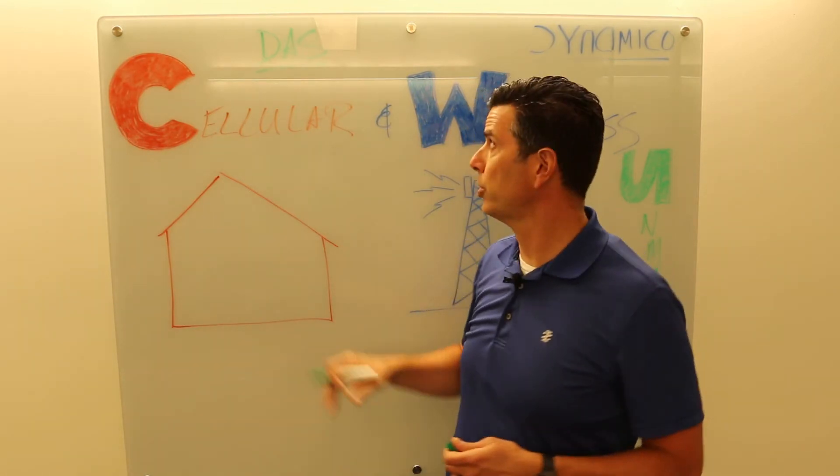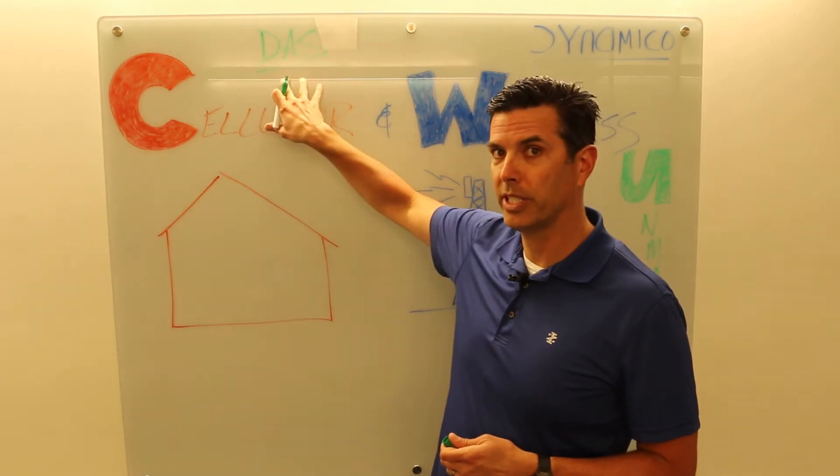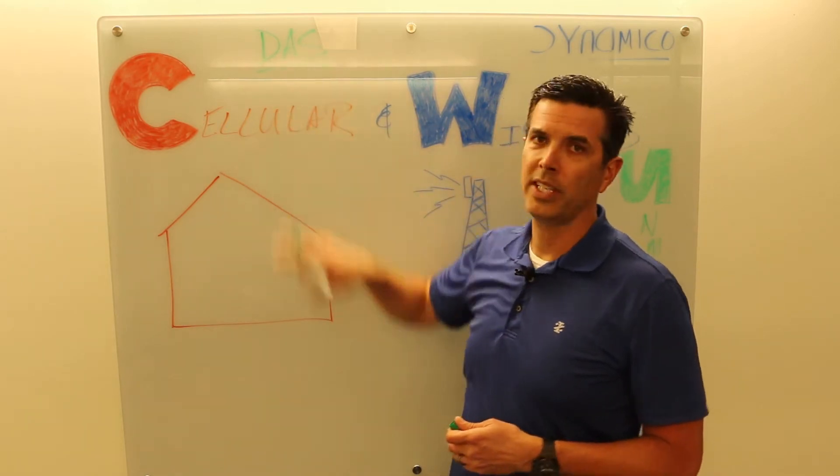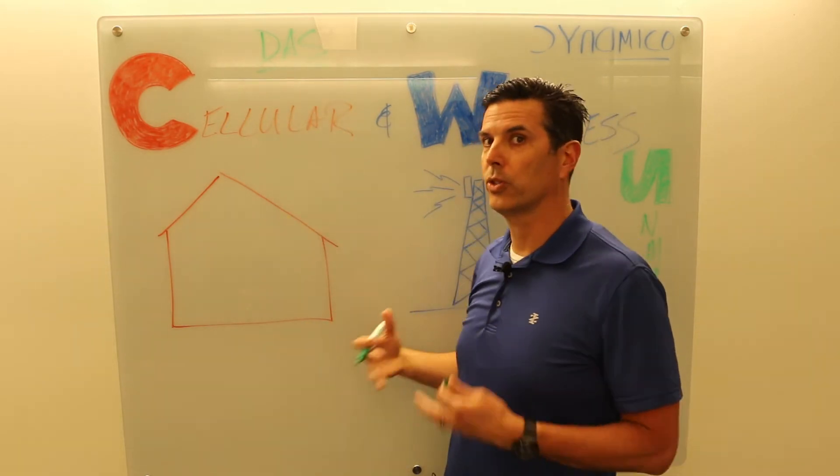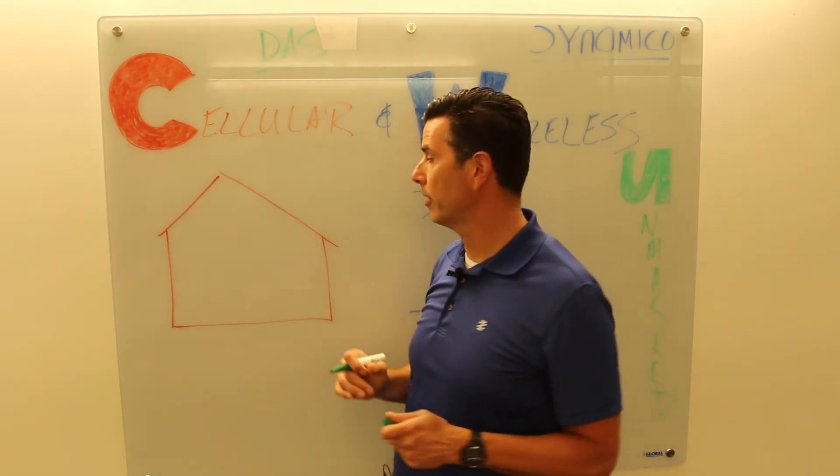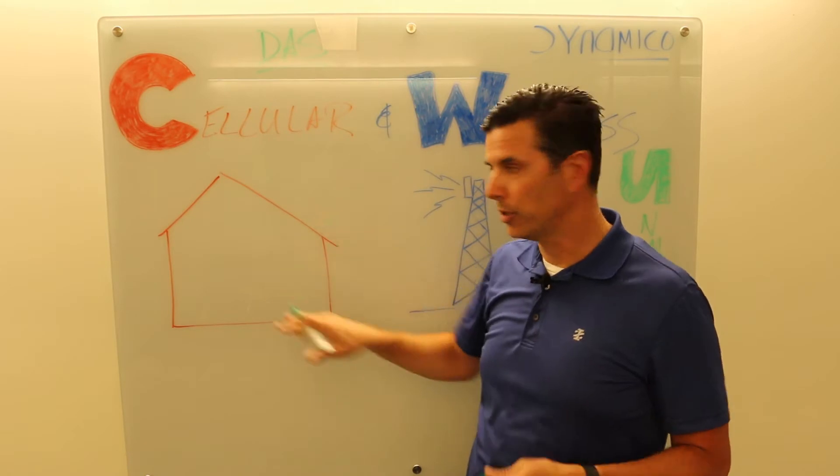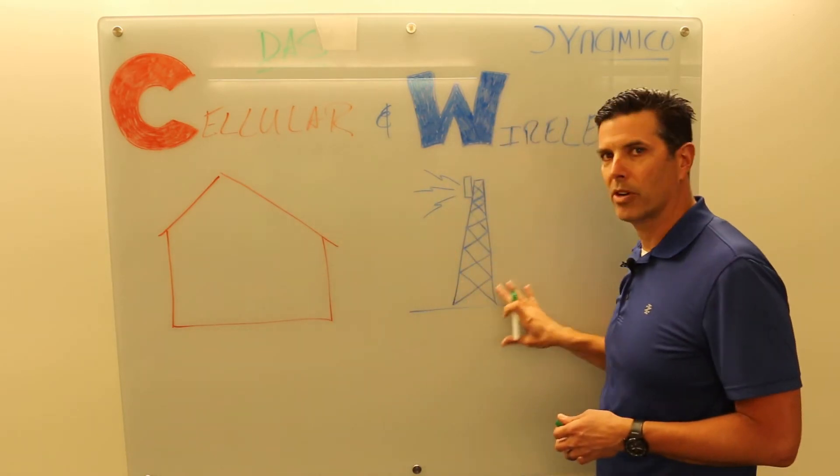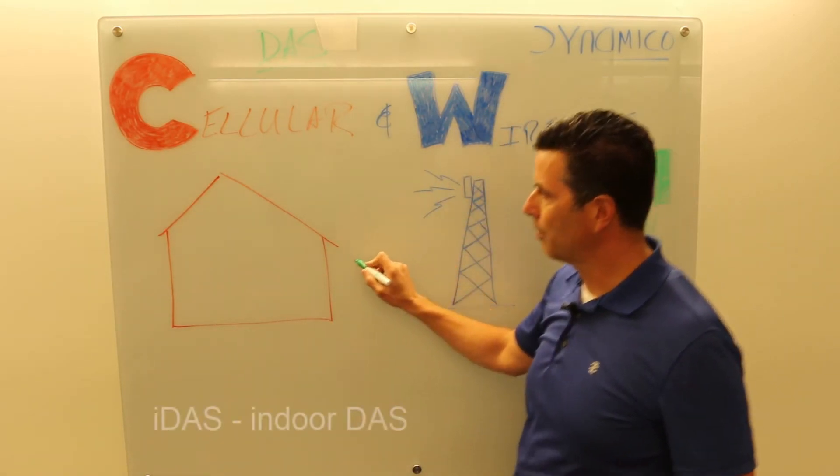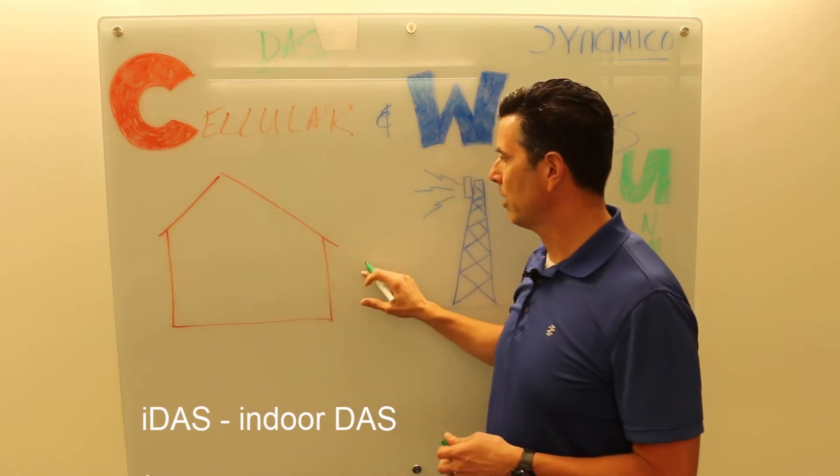This is most often a cellular play. There is also a public safety play, we'll talk about that here in a minute. But really what a distributed antenna system is meant to do is take the signals from your average cell tower and get them inside a building.